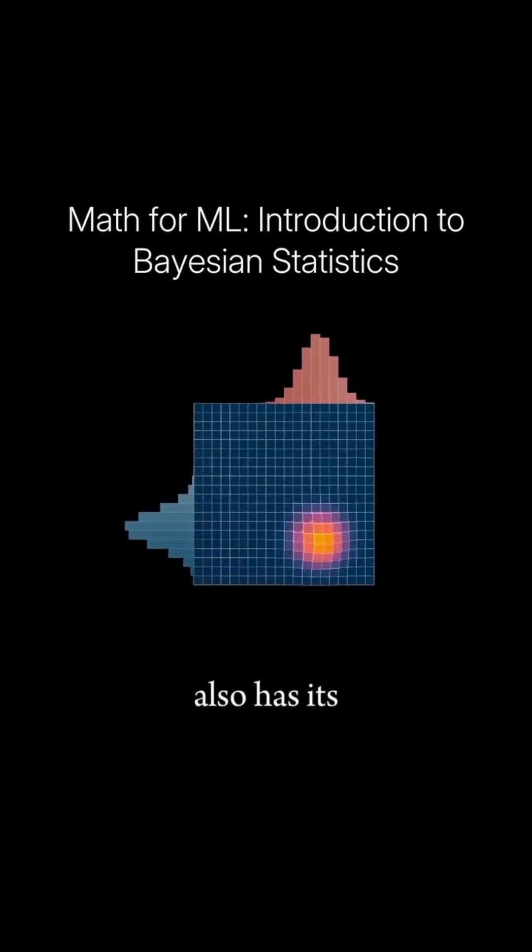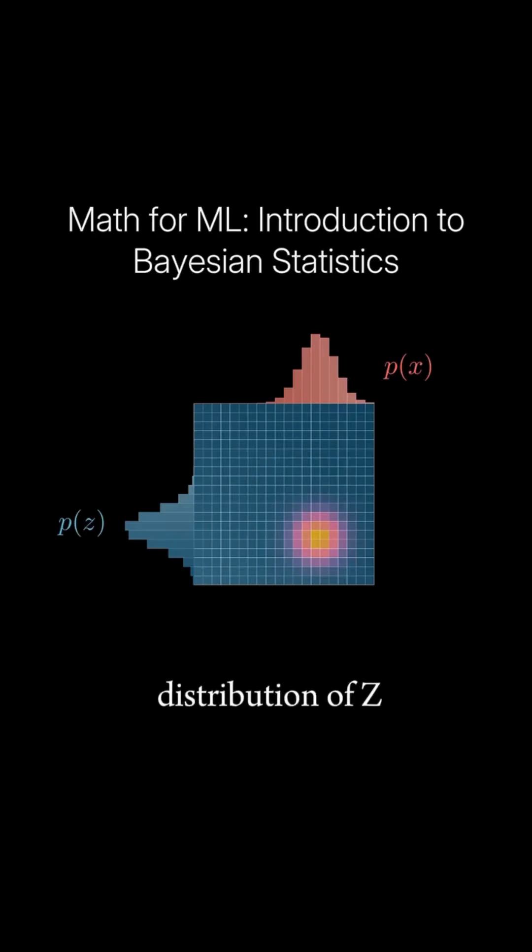Of course, each variable also has its own individual probability distribution, known as the marginal distribution. As before, we denote the marginal distribution of x as p of x, and the marginal distribution of z as p of z.